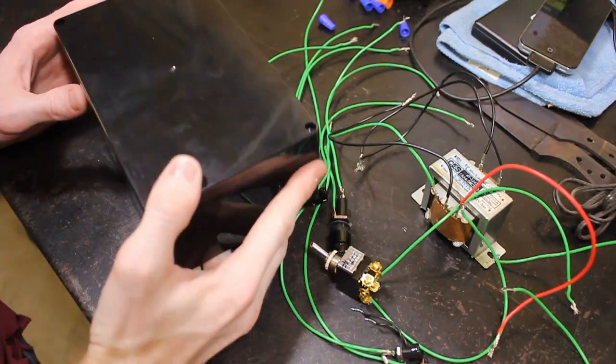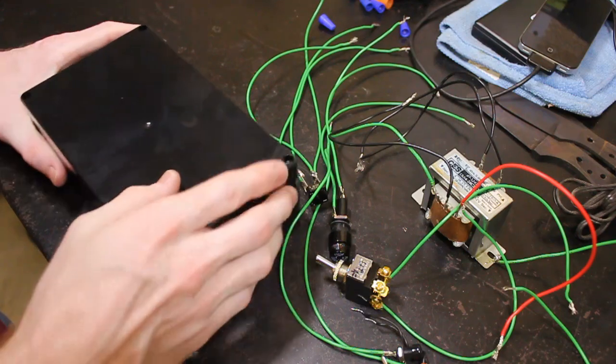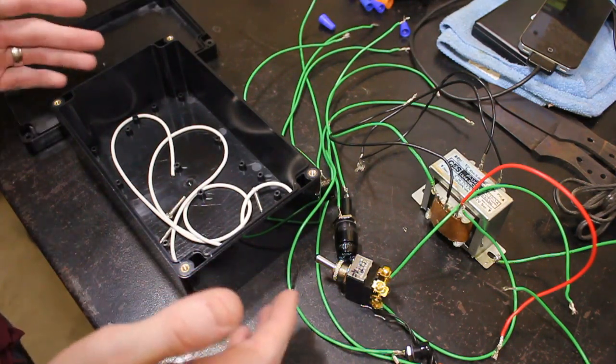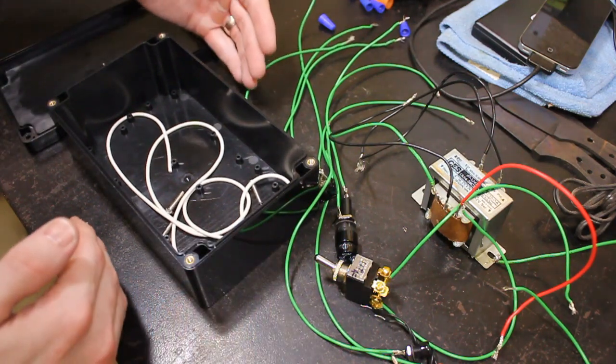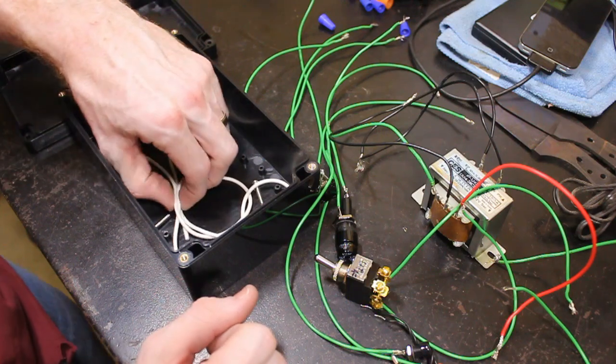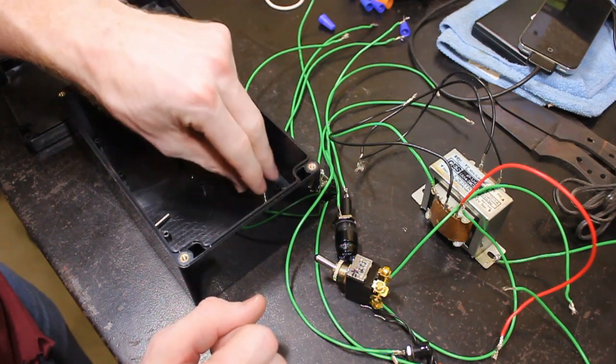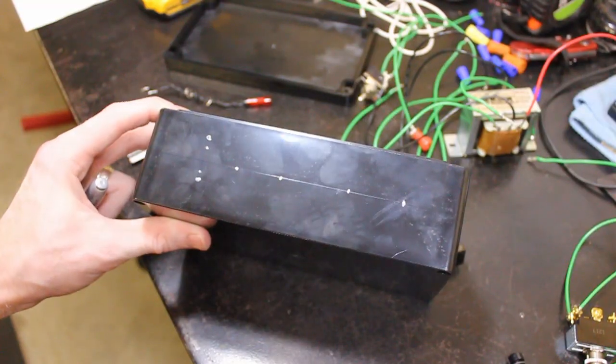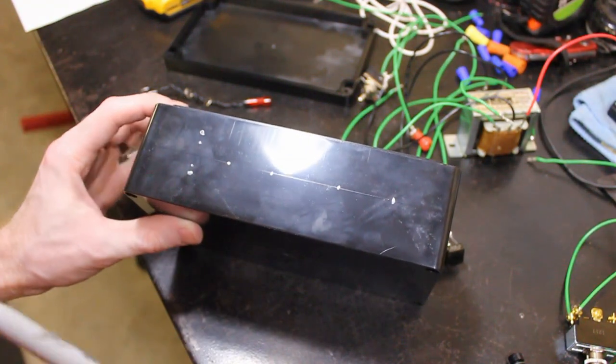And lastly I have this project box here. This project box has outside dimensions of 200 millimeters by 120 millimeters by 75 millimeters. And this is what we're going to be building our etching machine in. So you can get these pretty cheap. I think it was $12 on Amazon. So now we're going to drill some holes in our project box.